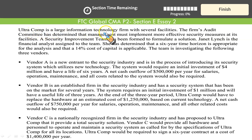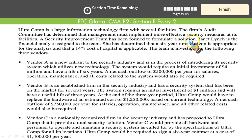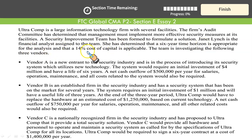Ultracomp is a large information technology firm with several facilities. The firm's audit committee has determined that management must implement more effective security measures at its facility. A security improvement team has been formed to formulate a solution. Janet Lynch is the financial analyst assigned to the team. She has determined that a 6-year time horizon is appropriate for the analysis and that a 14% cost of capital is applicable — we would use this rate as our discount rate.